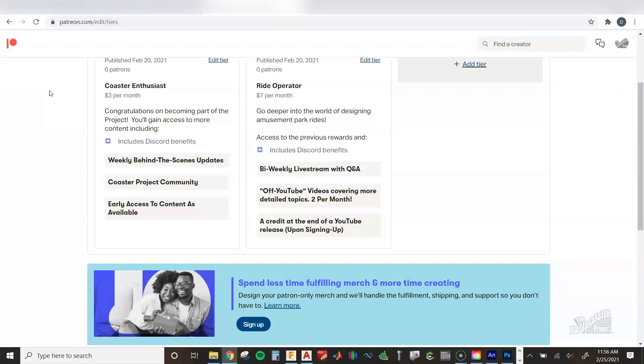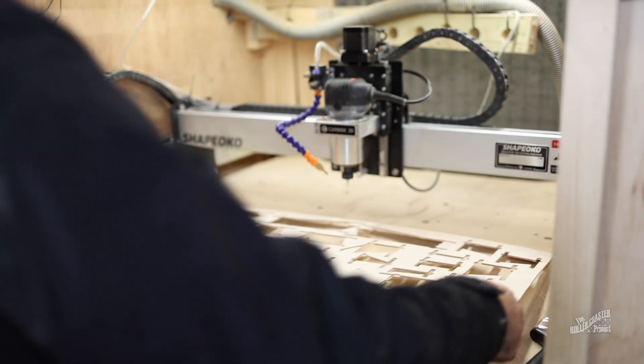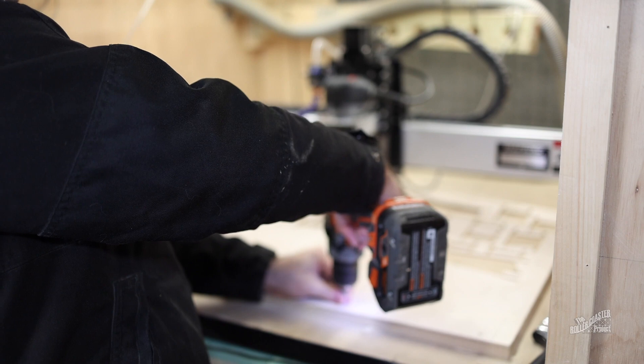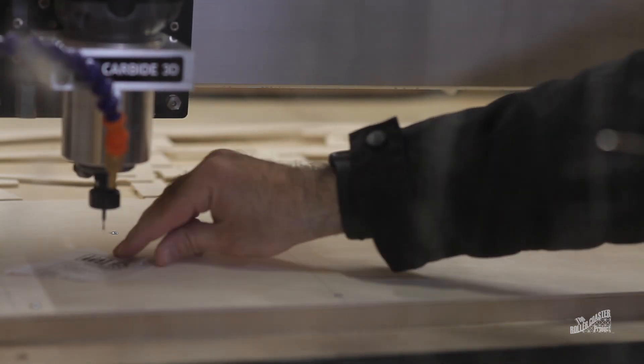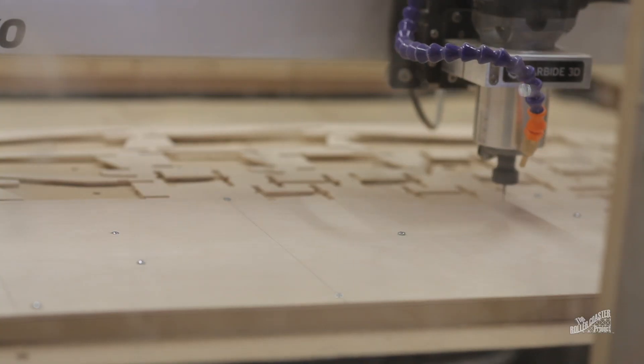To get started, we place the wood on top of the Shapeoko just as in the previous videos, and we use screws without adhesive. The initial operation will be drilling the holes that'll hold the track brackets.